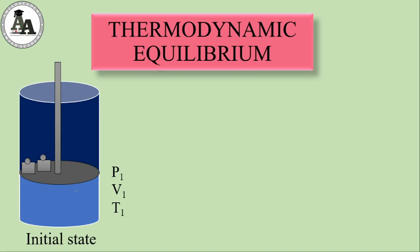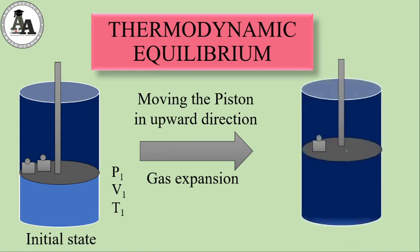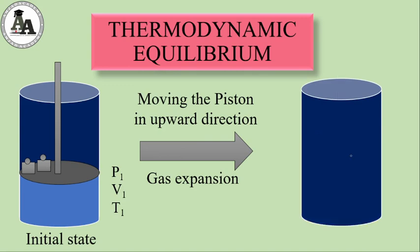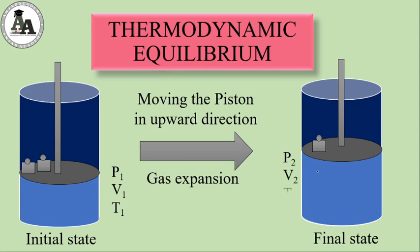Ab hum yahan se ek weight hata de rahe hain — piston par do weights rakhe hue hain. Ek weight hatane par piston upward move hoga, gas expand hogi. So during its motion we cannot define its pressure, its volume, and temperature.